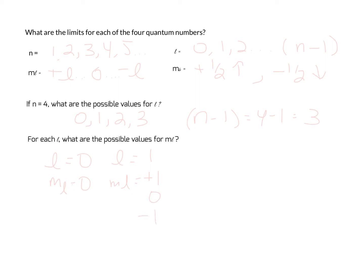That is what I was attempting to explain right here. If l is equal to 2, our choices for m sub l are plus 2, plus 1, 0, minus 1, or minus 2.